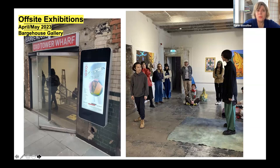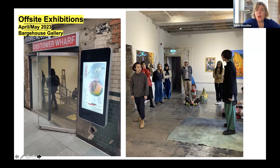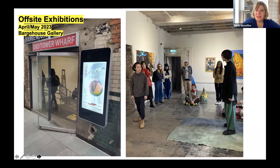Student Susan Askew worked specifically with the history of this building and made an installation in response to the space, which helped develop research about animal welfare, human rights and ideas about human violence. Susan went on to develop what she calls a future museum set in 2063, called the Museum of Human Violence — looking at how we would understand ourselves from the future and the wrongs we've made as a society.